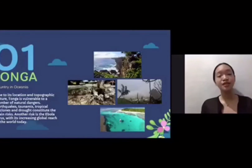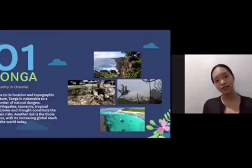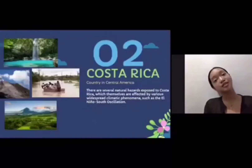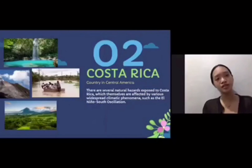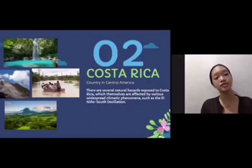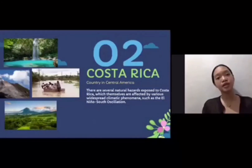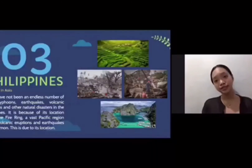Earthquakes, tsunamis, tropical cyclones, and droughts constitute the main hazards in Tonga. The second place is Costa Rica, a country in Central America. It is also prone to geological hazards. There are several natural hazards exposed to Costa Rica, which are themselves affected by various widespread climatic phenomena such as El Niño.